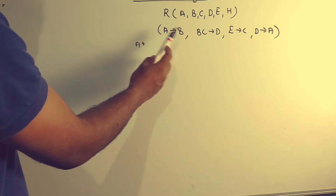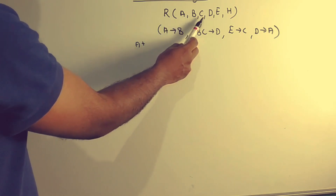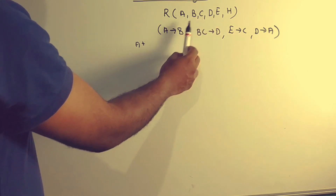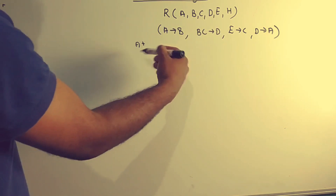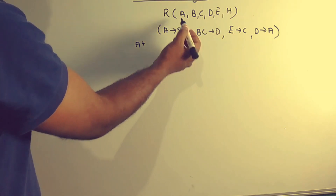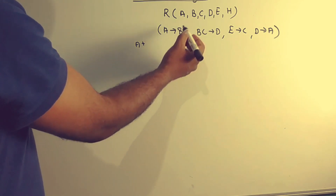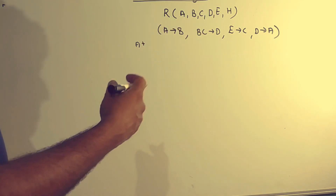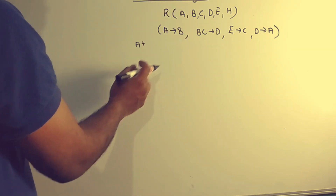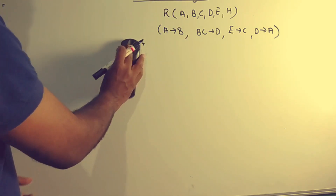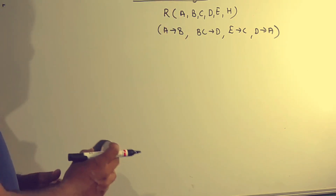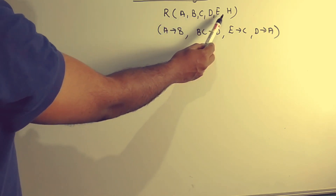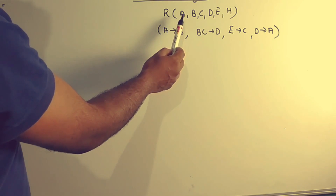Let us look at the example table. We have relation R of A, B, C, D, E, H — these are the attributes. We can use all the attributes and their codes. However, there are functional dependencies among these attributes.